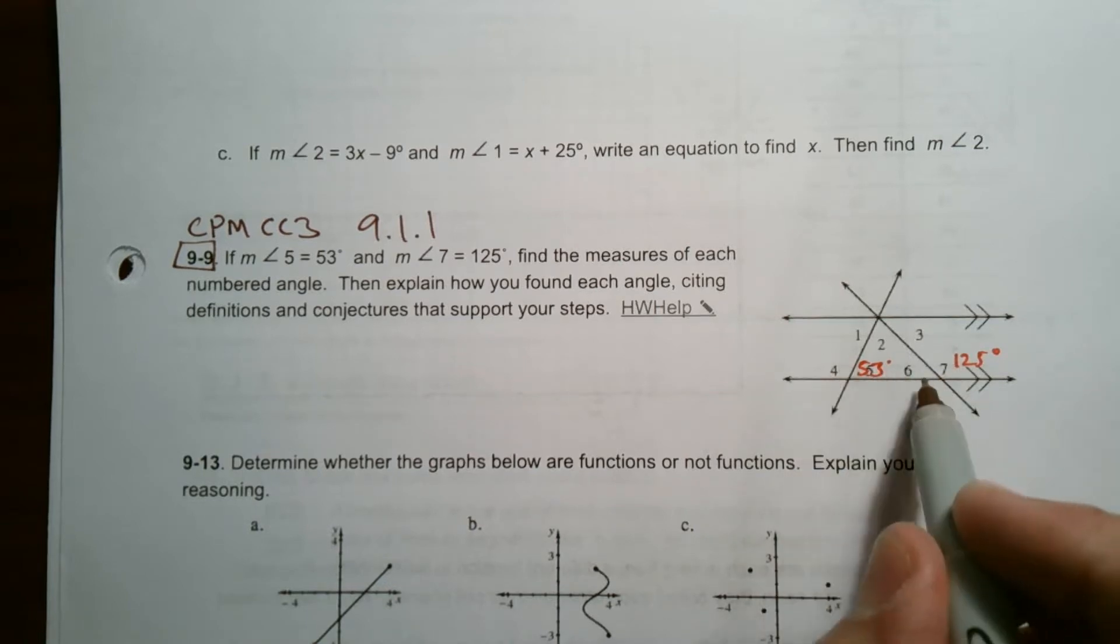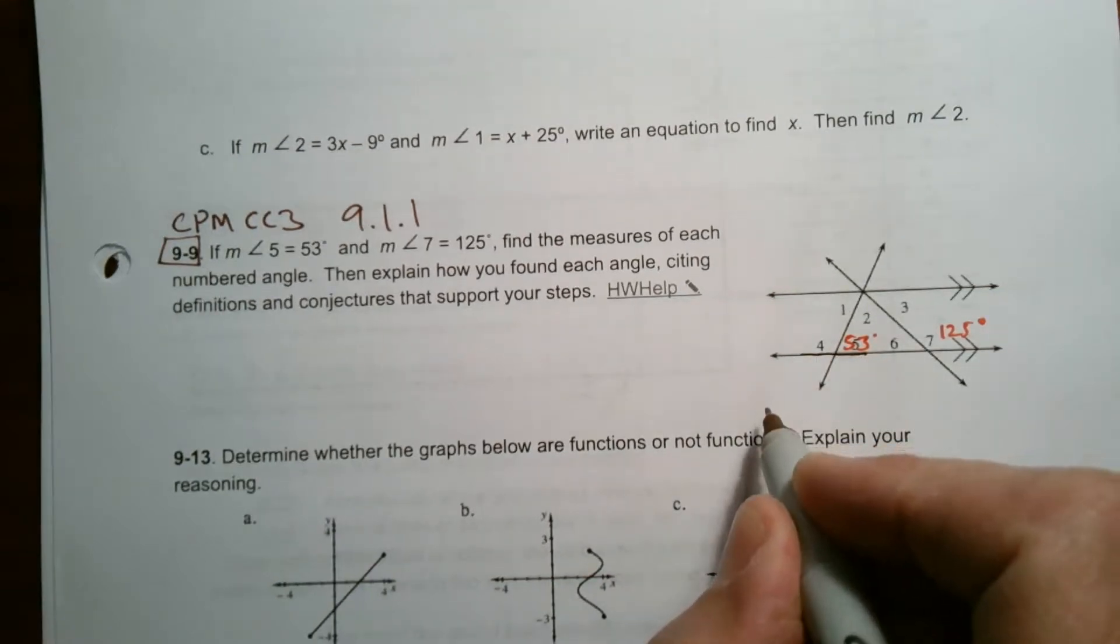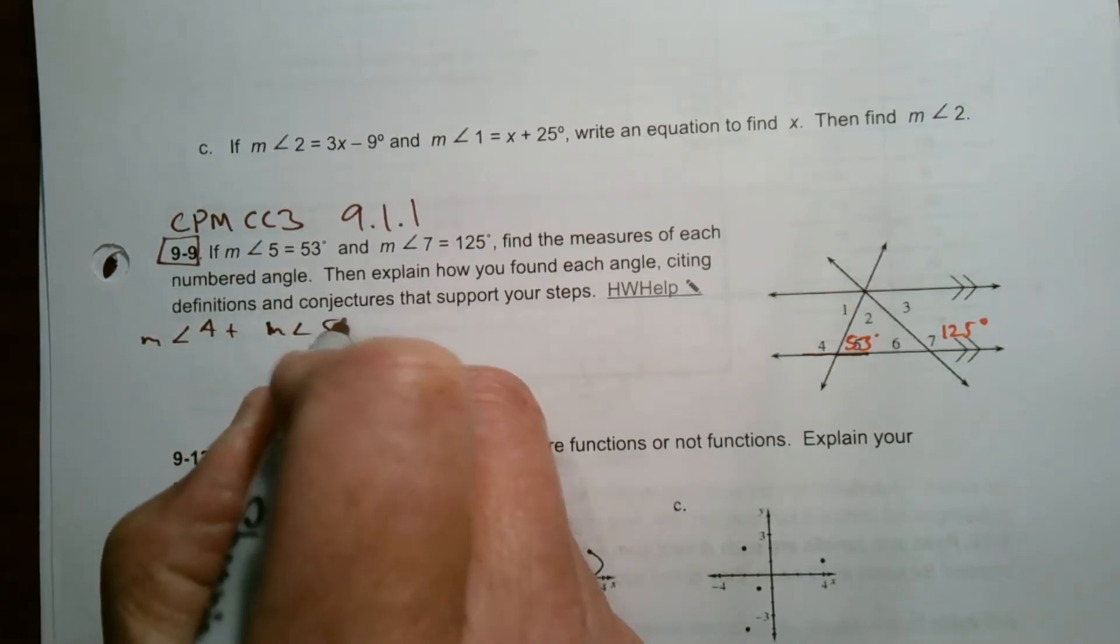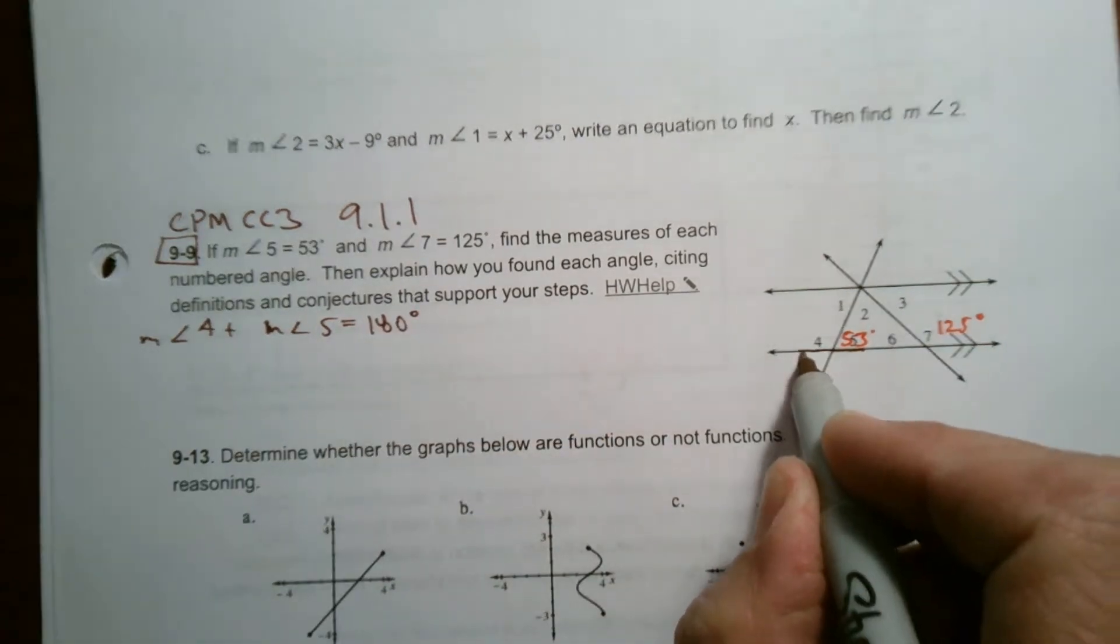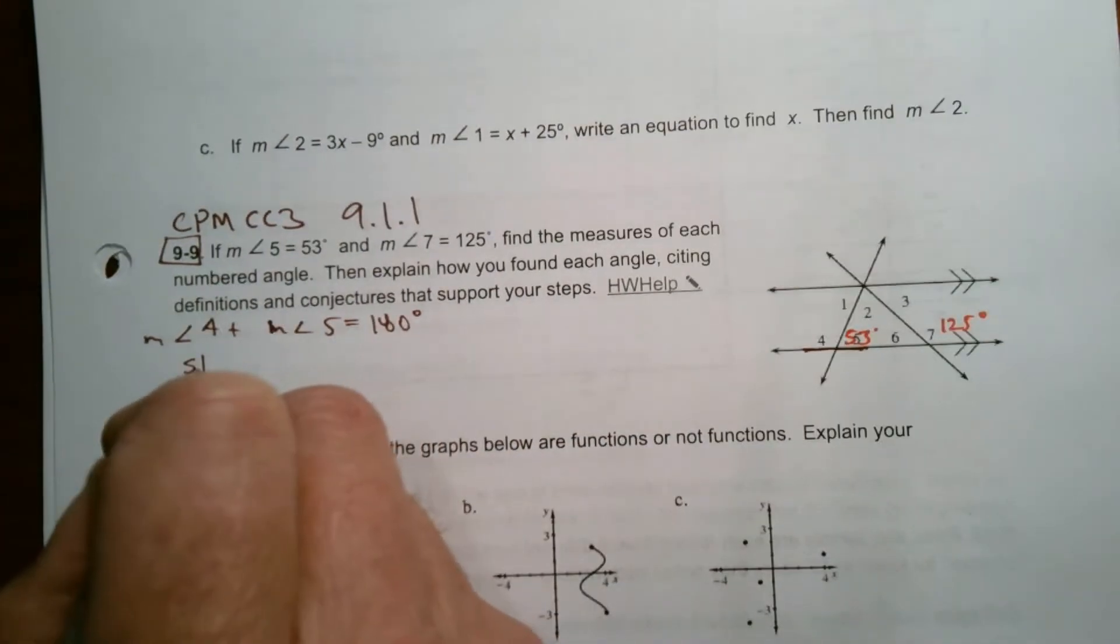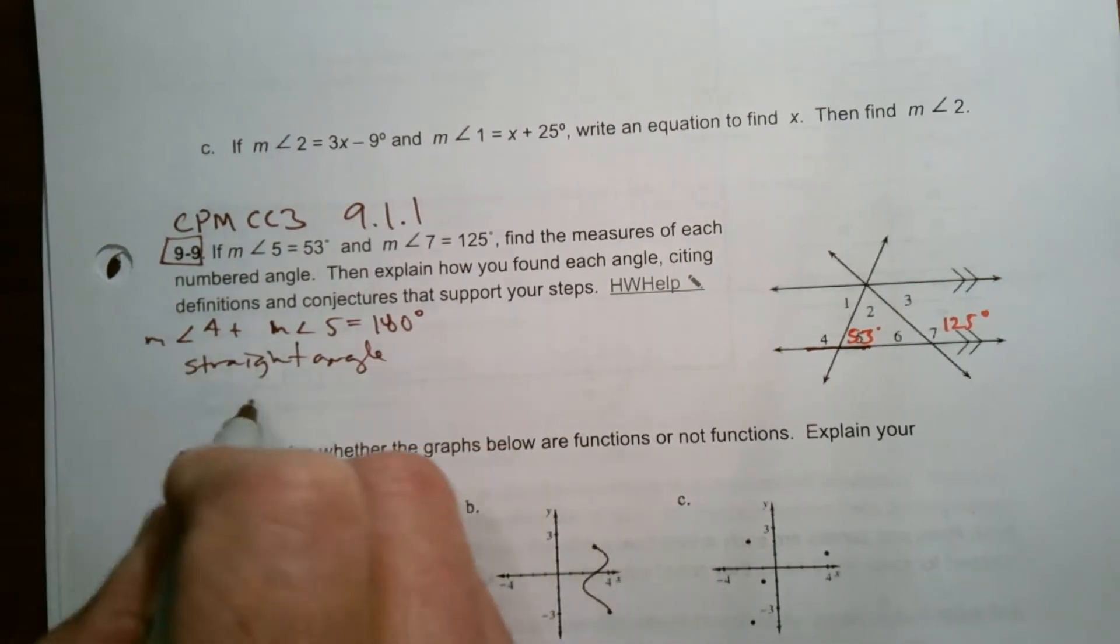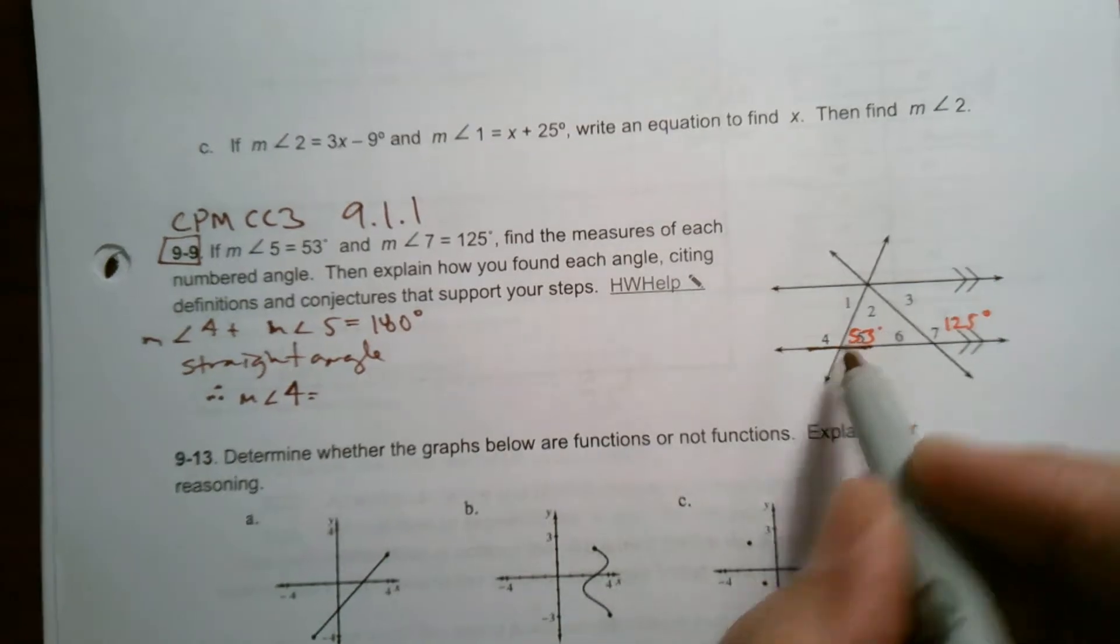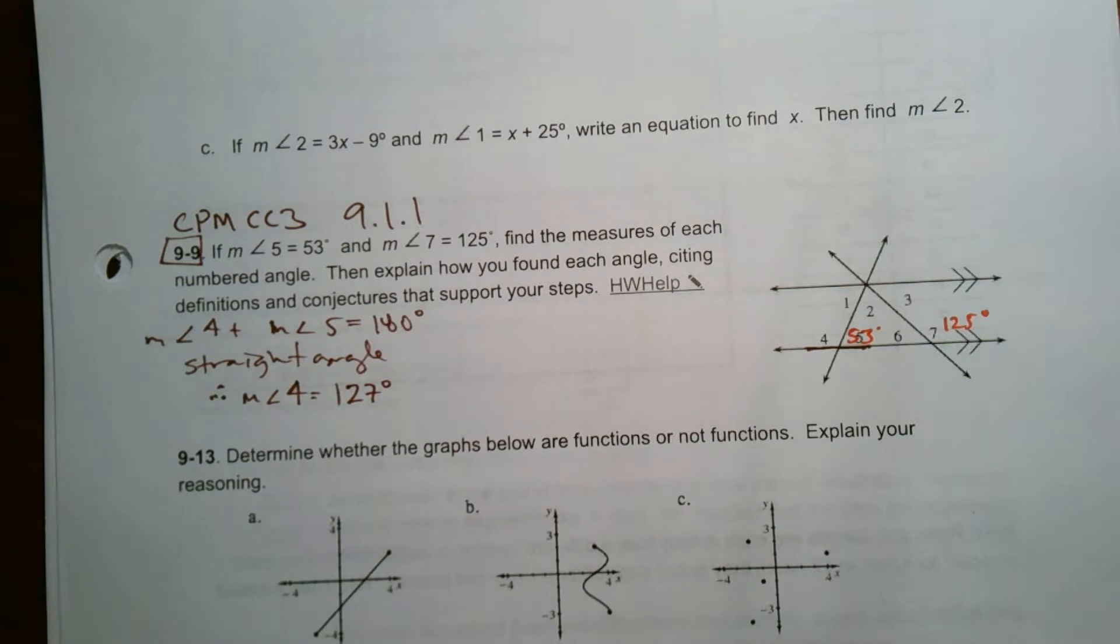Right off the get-go here, I can find 4 and 6 based on these two because I know that we have a straight angle, right? So the measure of angle 4 plus the measure of angle 5 would equal 180, because it's a straight angle. So therefore, the measure of angle 4 would be 127 degrees.